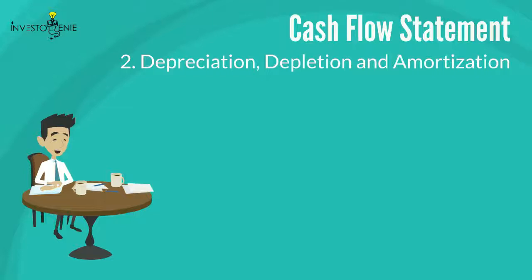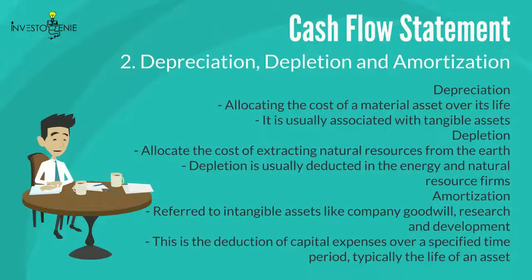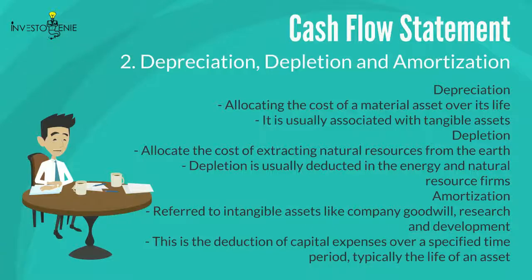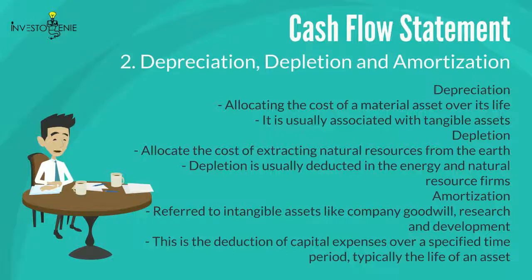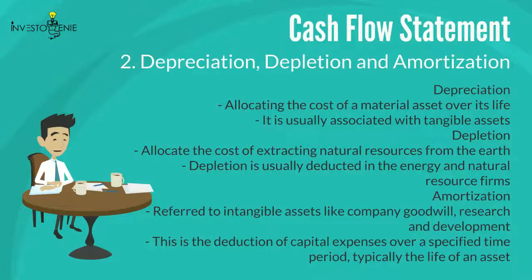Two: depreciation, depletion, and amortization (DD&A) are non-cash expenses used in accrual accounting. Depreciation is allocating the cost of a material asset over its life, usually associated with tangible assets. Depletion is allocating the cost of extracting natural resources from the earth, typically deducted in energy and natural resource firms. Amortization is exclusively referred to intangible assets like goodwill and research and development — it is the deduction of capital expenses over a specified time period, typically the life of an asset.